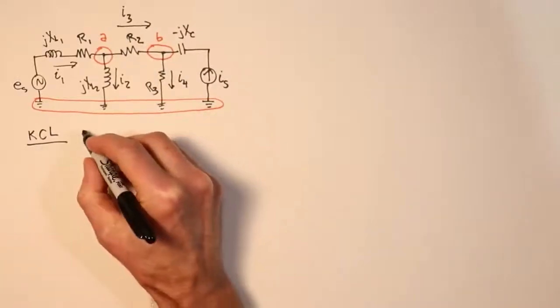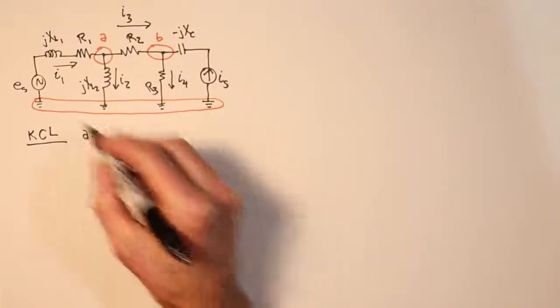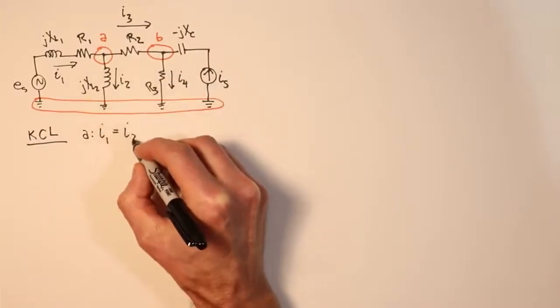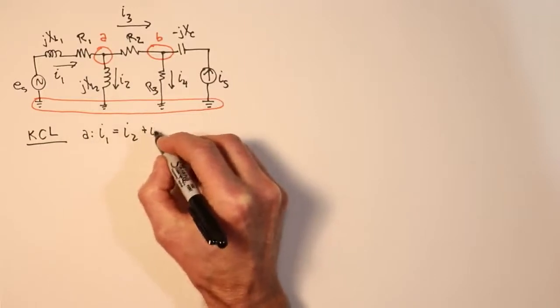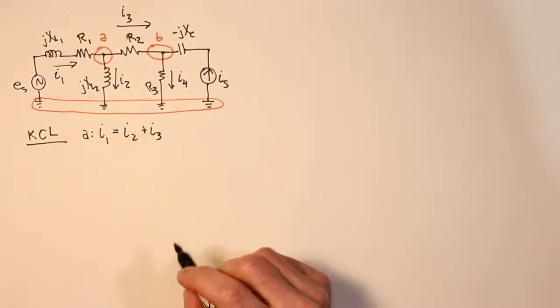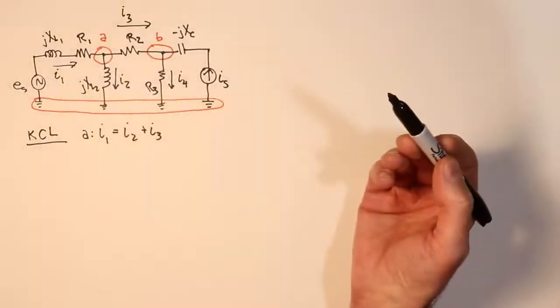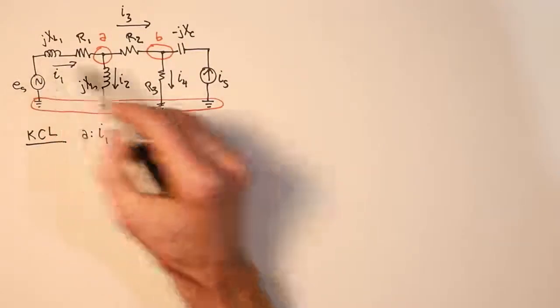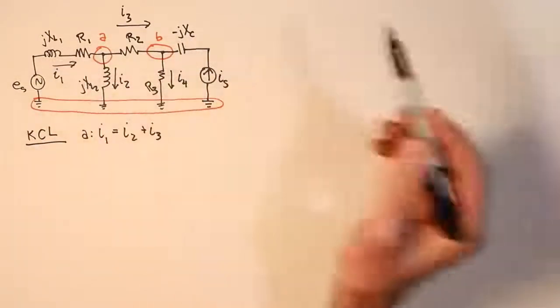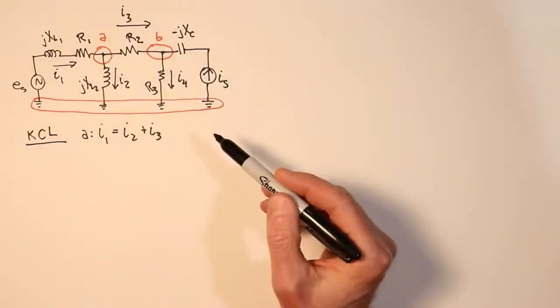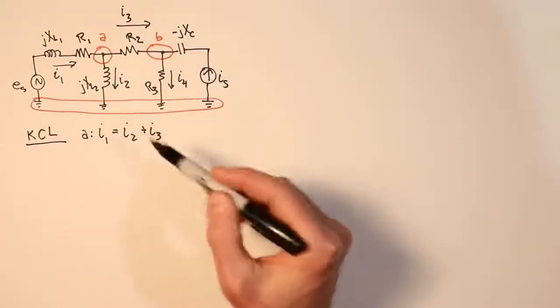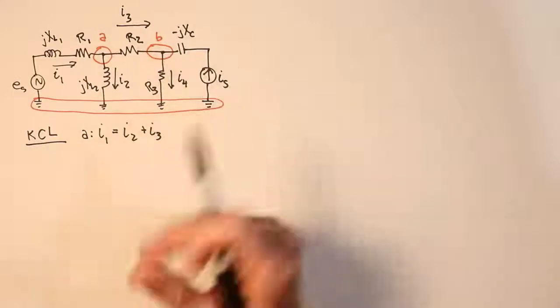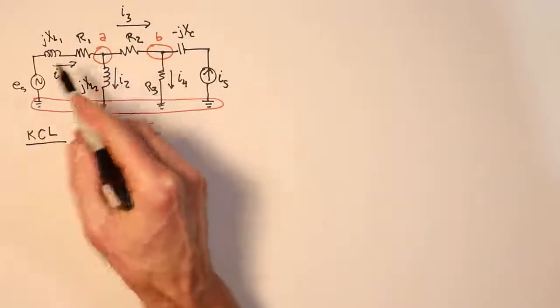So now we're going to use Kirchhoff's current law to write a summation, a current summation at each of these nodes. So we start off with node A. What do I see for node A? Well, coming in is I1, and then exiting we see I2 and I3. Now, what is I1? I don't know that off the top of my head. We know the values of the voltage source, the current source, the resistors, inductors, capacitors, things like that. Those are the component values that we know.